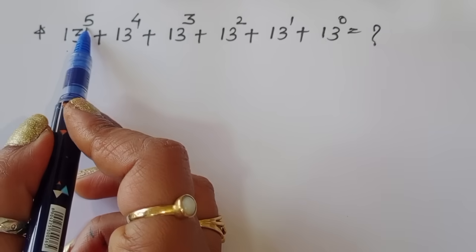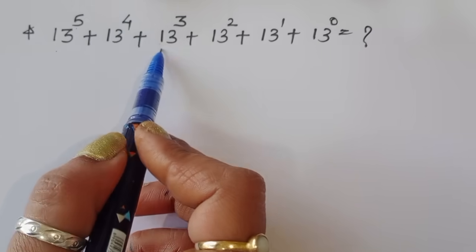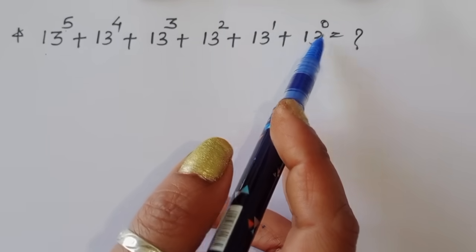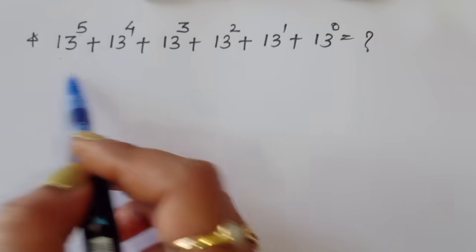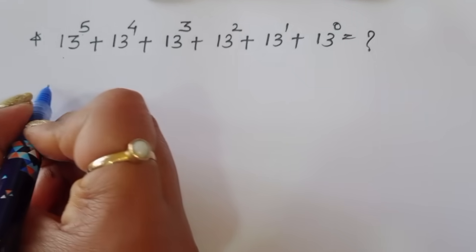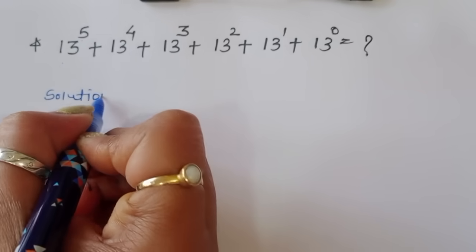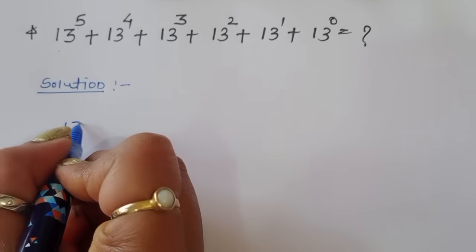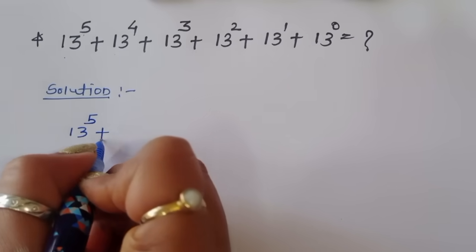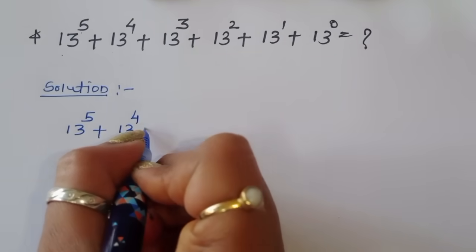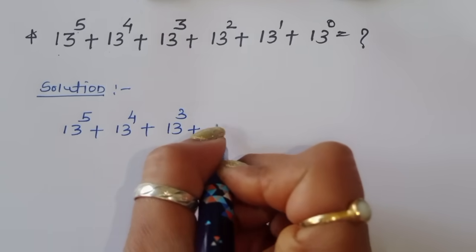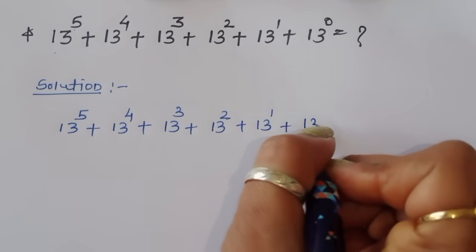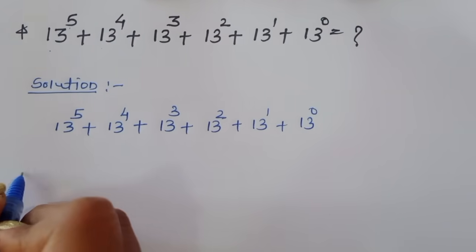The question is: 13 power 5 plus 13 power 4 plus 13 power 3 plus 13 power 2 plus 13 power 1 plus 13 power 0 is equal to what? We have to find out the value of this term. Let's see the solution.